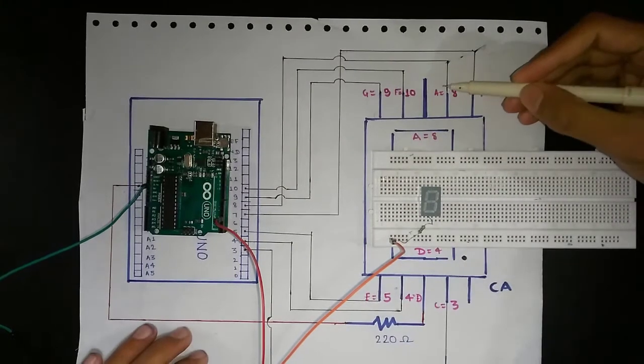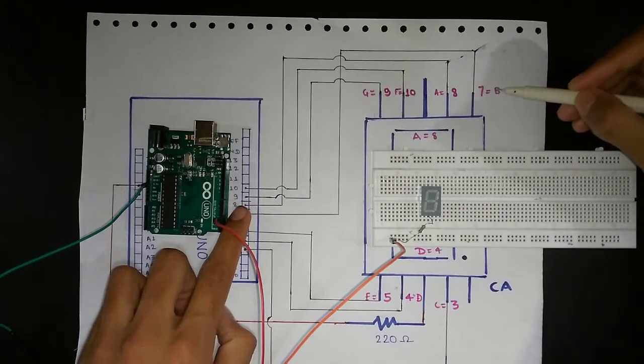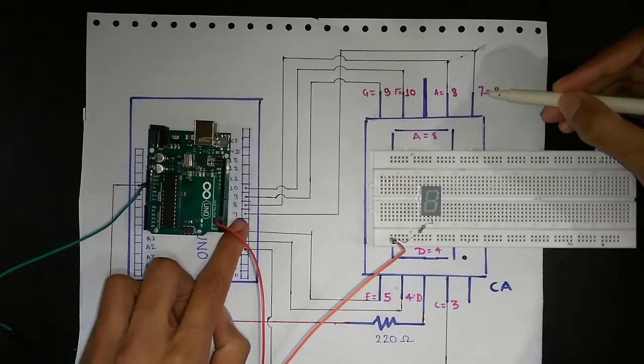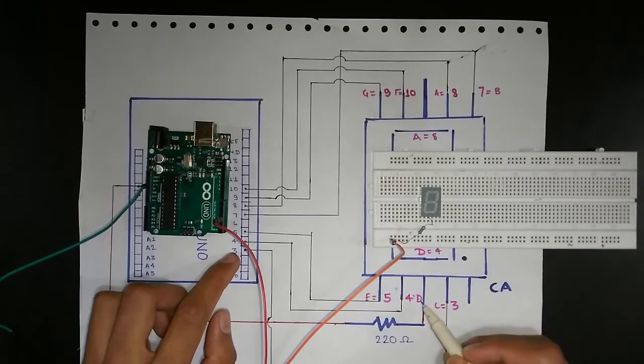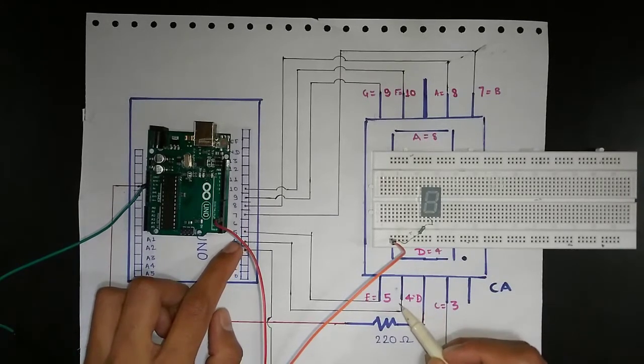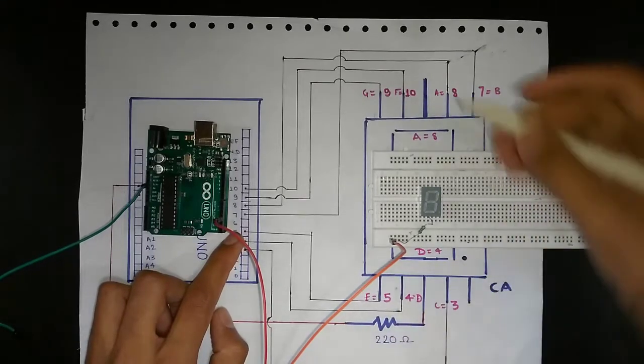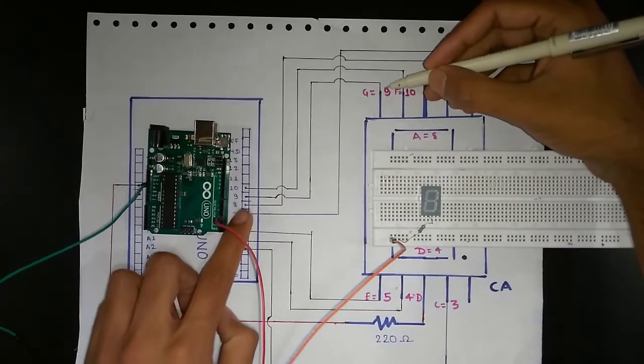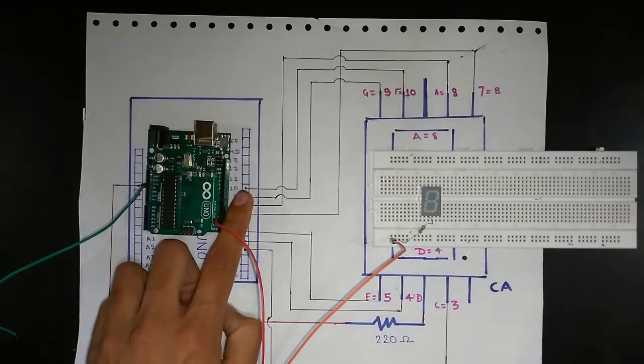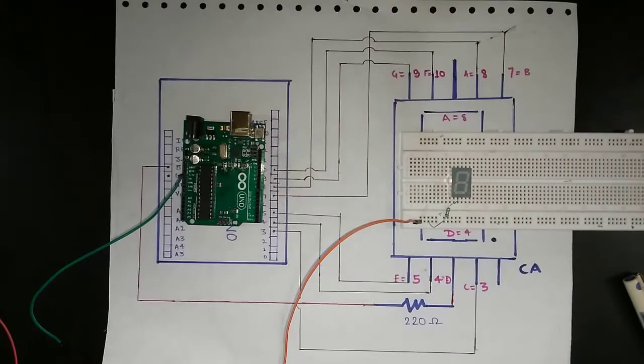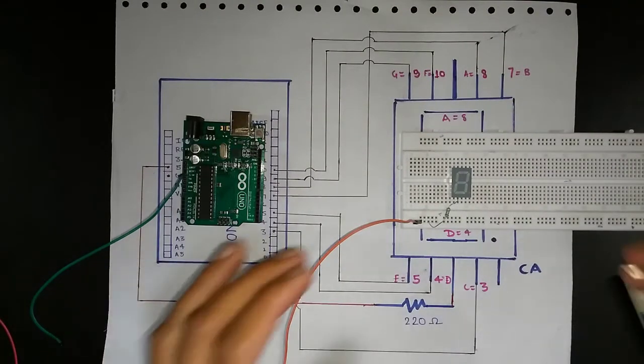Now we will connect A segment to the 8th port of Arduino, B segment to the 7th port of Arduino, C segment to the 3rd port of Arduino, D segment to 4th port of Arduino, E segment to 5th port of Arduino and similarly G segment to 9th port of Arduino and F segment to the 10th port of Arduino.